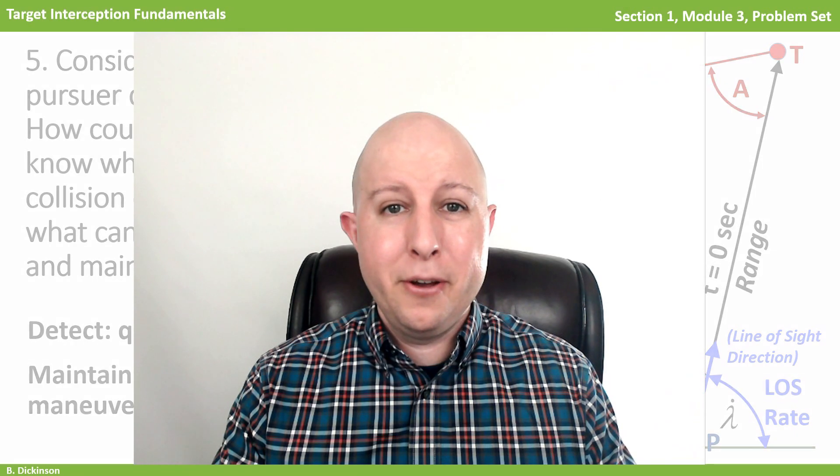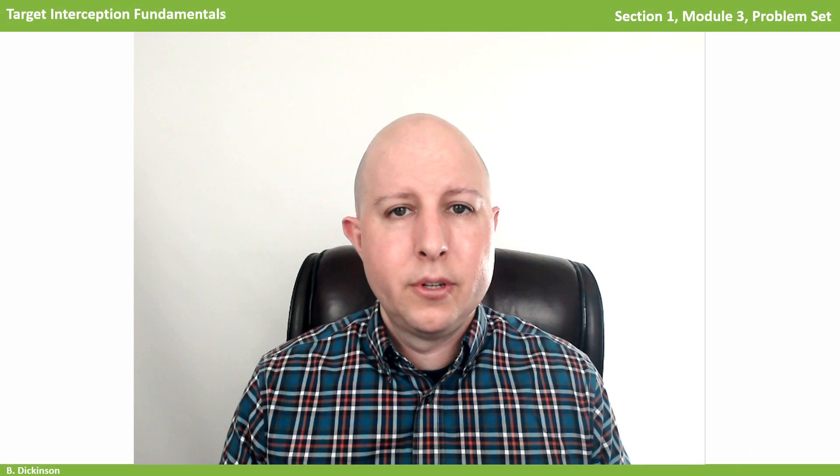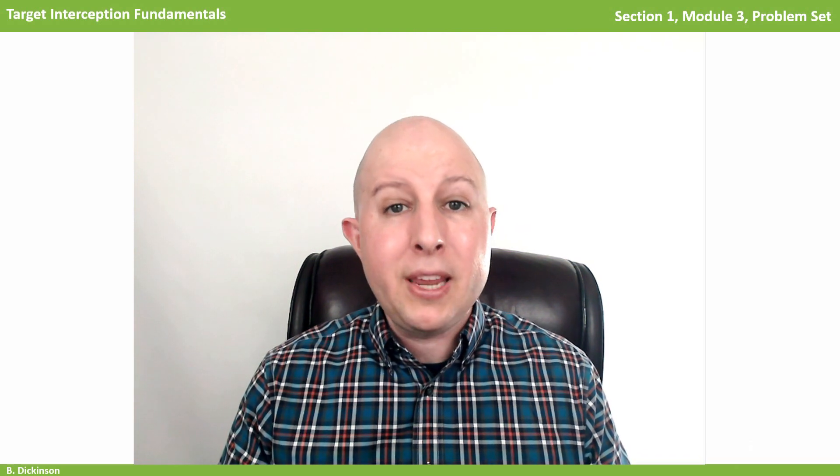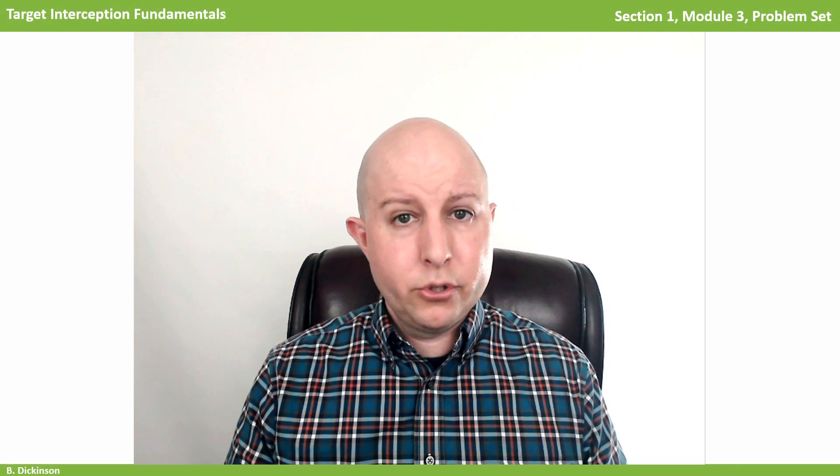Well, how did it go? In this problem set, we found that line of sight regulation, or driving the line of sight rate to zero, was a crucial factor in obtaining a collision course. In the next section, this will become even clearer as we make a qualitative introduction to proportional navigation.